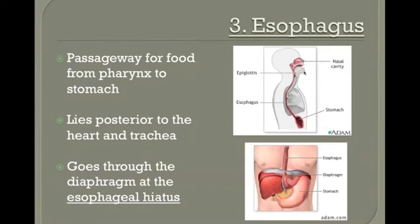The pharynx splits: the anterior side is for respiratory — that's where air travels — and the posterior side is for food. So food will enter from the mouth to the oropharynx, then the laryngopharynx, and then go into the esophagus where it will travel all the way to the stomach.